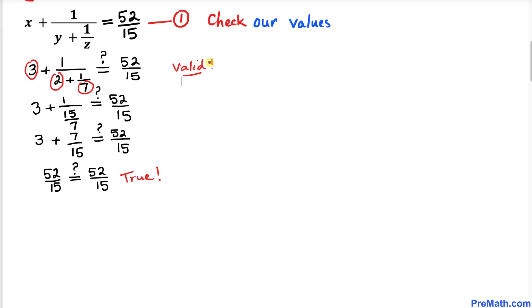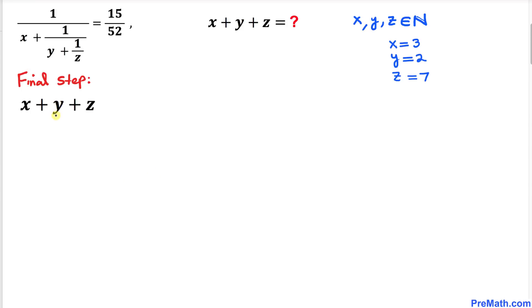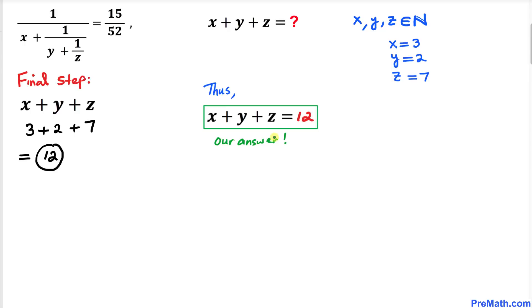Here's our final step: let's find x plus y plus z. Our x value is 3, y value is 2, and z value is 7. Adding them up, our final answer turns out to be 12. Thanks for watching and please don't forget to subscribe to my channel for more exciting videos. Bye!